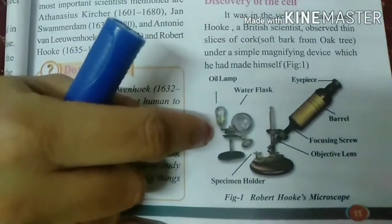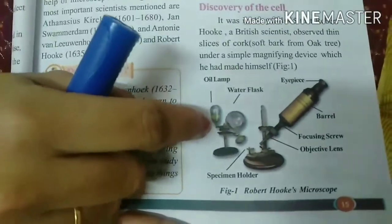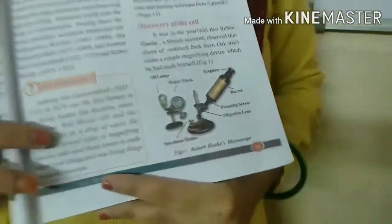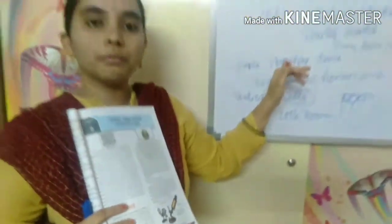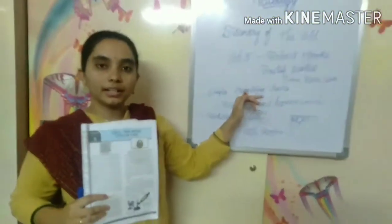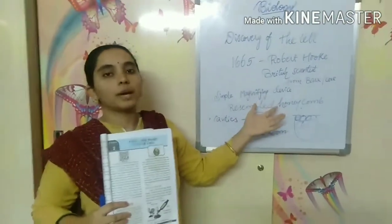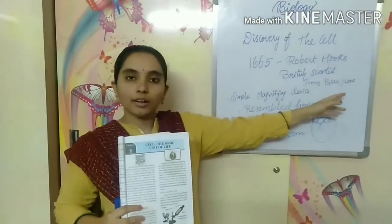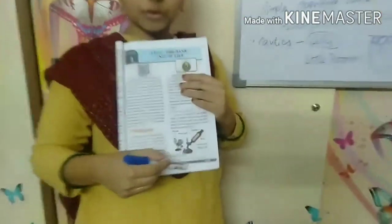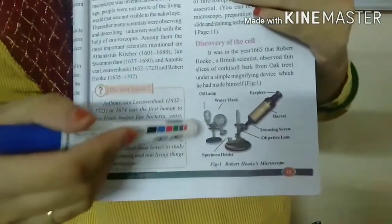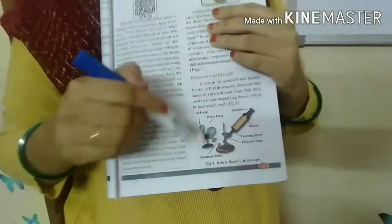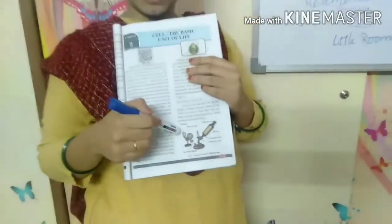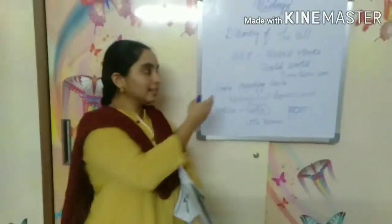This is Robert Hooke's microscope. As I told you, he prepared his own magnifying device, his own microscope, to see the cork cells. This was the microscope that Robert Hooke made by himself to see the cells.